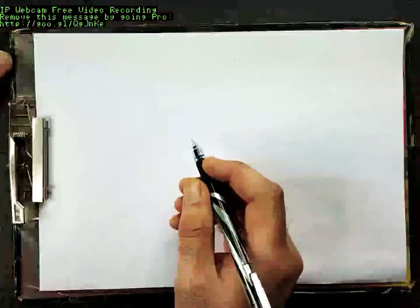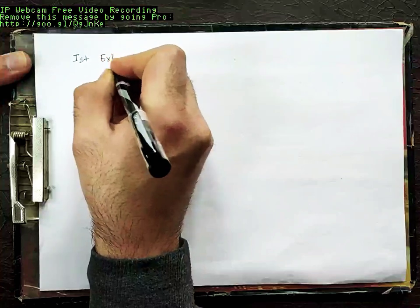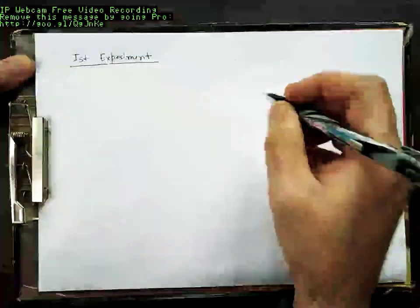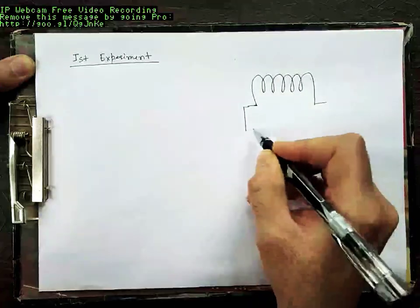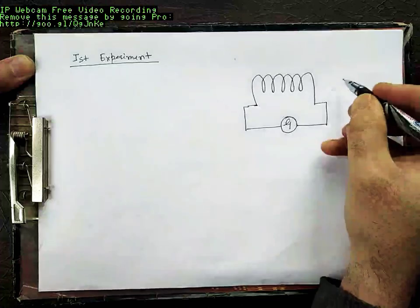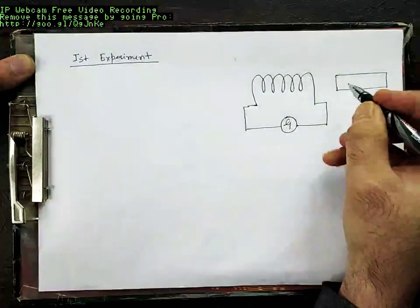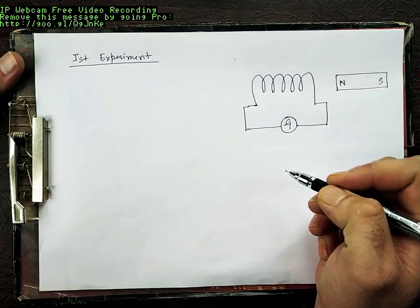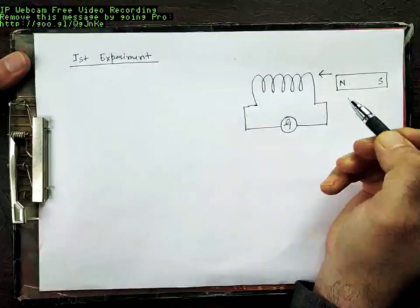There are three experiments that were performed by Faraday. In the first experiment, Faraday took a coil and connected a sensitive galvanometer across the coil to detect any current. He took a bar magnet and placed it in the vicinity of this coil — suppose this is the north and this is the south pole. What Faraday observed was that whenever this bar magnet was pushed towards the coil, the galvanometer showed deflection.